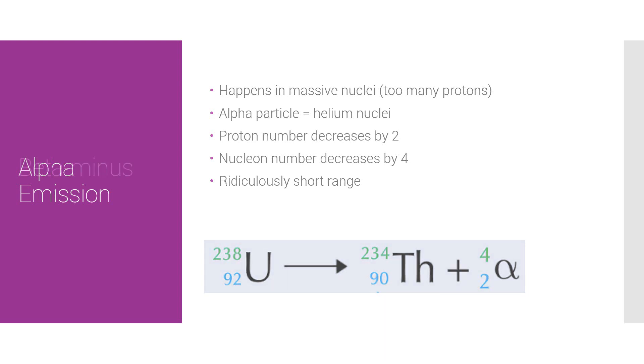Next thing is beta minus emission. In GCSE, you might have heard of, will have gone through beta emission, but there is beta minus and there is beta plus. But right now we're going to talk about beta minus. Basically, it happens in neutron-rich isotopes. So unlike alpha emission, instead of too many protons, this is too many neutrons. A beta particle is basically just an electron.